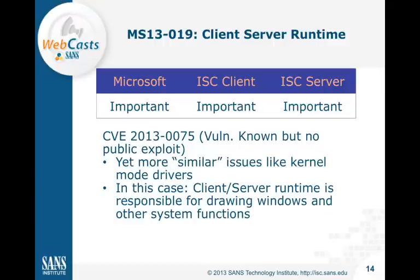Next we have yet another privilege escalation, this time in the client-server runtime. The client-server runtime has similar functionality and similar problems — it's used to send data to the more privileged side of the operating system. If that more privileged side has a vulnerability, an unprivileged user could abuse it to execute arbitrary code. The client-server runtime is particularly used to draw windows and initiate processes — all system functions requiring privileges are susceptible to these privilege escalation vulnerabilities.